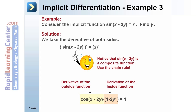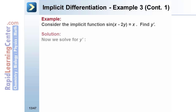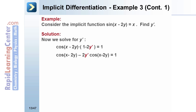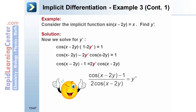The derivative of x on the right side is simply 1. Solving for y prime using the distributive property, we expand to get cosine of x minus 2y minus 2y prime times cosine of x minus 2y equals 1. We rearrange so that the 2y prime cosine of x minus 2y term is by itself, then divide both sides by 2 cosine of the quantity x minus 2y. The final answer is y prime equals cosine of x minus 2y minus 1, all divided by 2 cosine of the quantity x minus 2y.